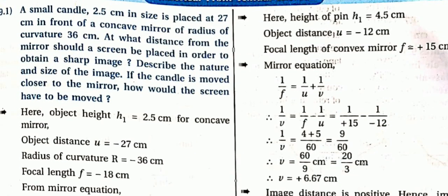A small candle of 2.5 cm in size is placed at 27 cm in front of a concave mirror. That is the object distance. Object distance is always negative, so u equals minus 27 cm.